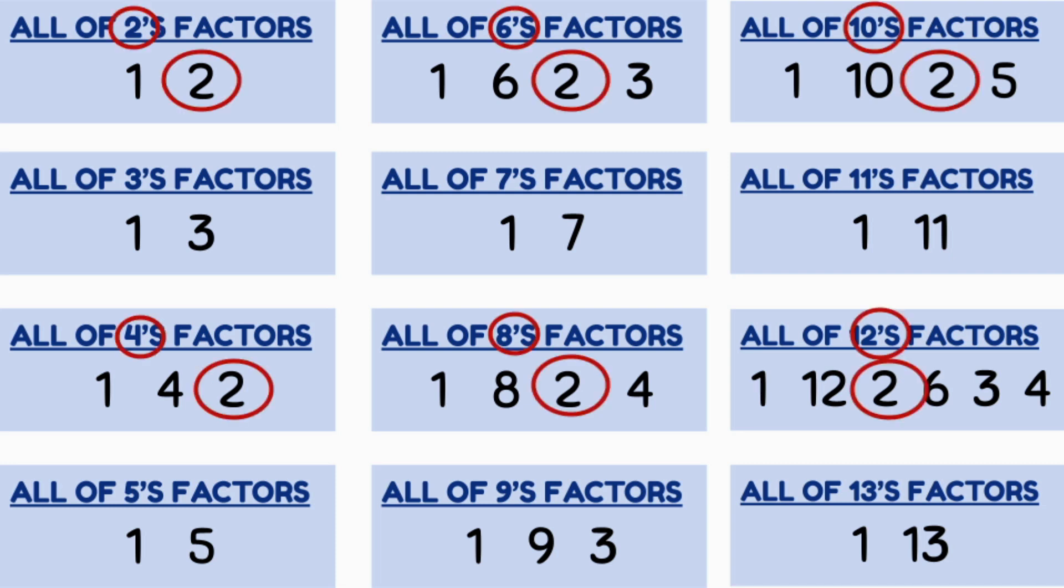It is also important to note that two is always a factor for any even number. As you can see, two is a factor for two, four, six, eight, 10 and 12. And this continues for all even numbers.